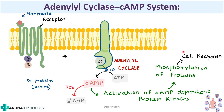How is this action terminated? The cAMP will be acted upon by an enzyme called phosphodiesterase, which converts cAMP back to 5'-AMP — that is how the action is terminated. This is the adenylyl cyclase cAMP system, wherein adenylyl cyclase is the enzyme activated and cAMP is the second messenger.